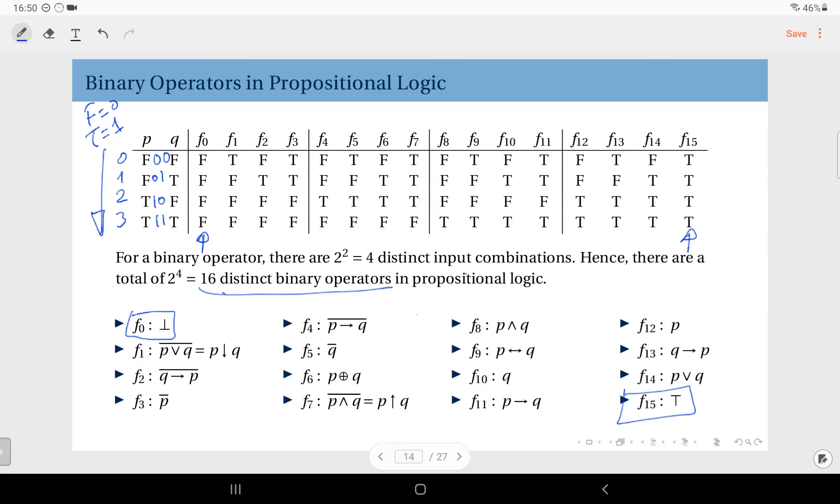And we also have the simple ones like P. F12 is P. And we also have Q, which is F10. And we also have their negations, right? Not P here, F3. And not Q here, that's F5. And some of them we covered, like P and Q here. P and Q. And where is P or Q? That's F14.